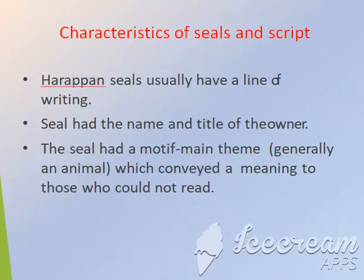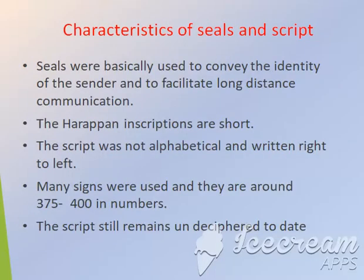The characteristics of seals: each seal has a line of writing and had the name of the owner. The seal also had a motif of an animal, which conveyed meaning to those who could not read. It was used to convey the identity of the sender.